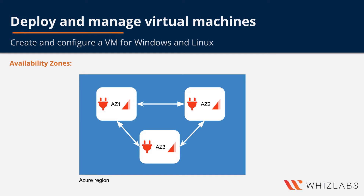Note that an availability zone in an Azure region is a combination of a fault domain and an update domain. For example, if you create three or more VMs across three different zones in an Azure region, your VMs are effectively distributed across the fault domains and the update domains.